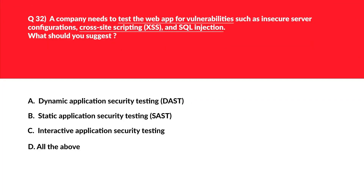We have an interesting question. Option A is DAST — Dynamic Application Security Testing — which is used for any running code deployed in the infrastructure. This can be the potential answer, so we'll park it. Option B is SAST — Static Application Security Testing — which is for non-running code.